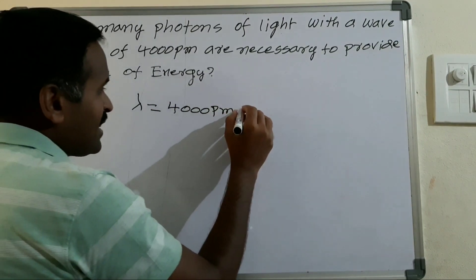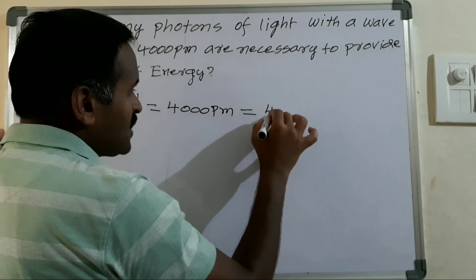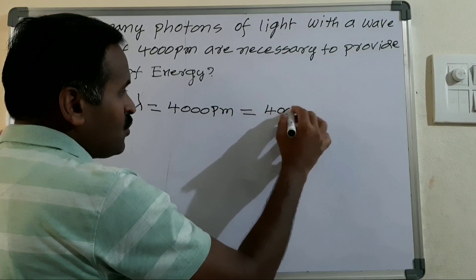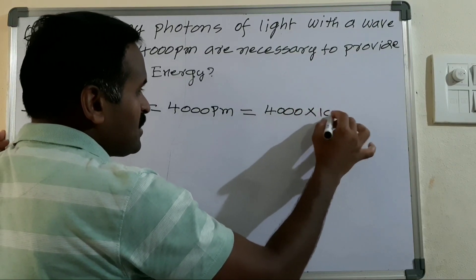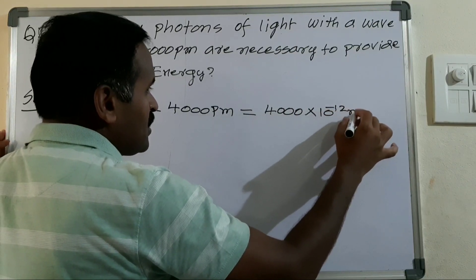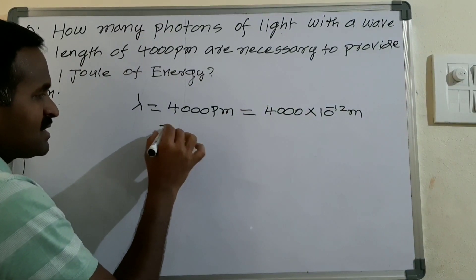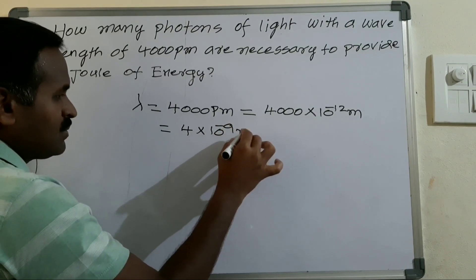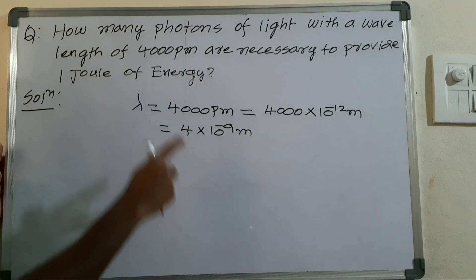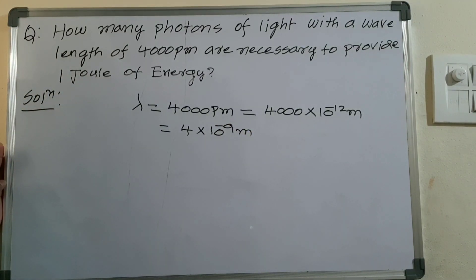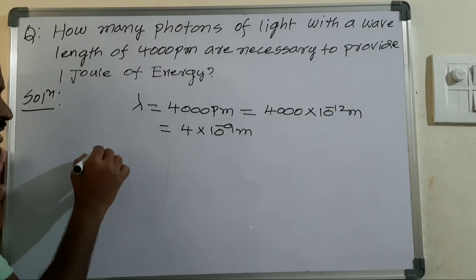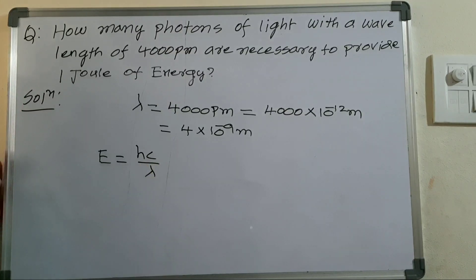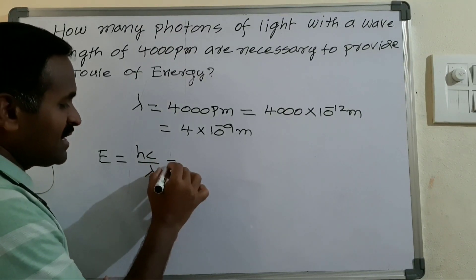4000 picometers means: one picometer equals 10 power minus 12 meter, so 4000 picometers is 4000 into 10 power minus 12 meter, which simplifies to 4 into 10 power minus 9 meter. The energy formula is E equals hc divided by lambda.